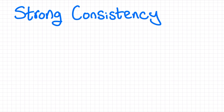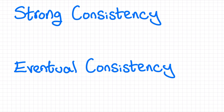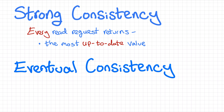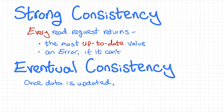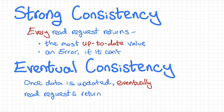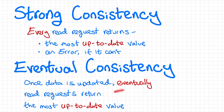There are two main types of consistency: strong consistency and eventual consistency. Strong consistency means that every read request will always return the most up-to-date value, or an error if it can't do that. Eventual consistency is a more relaxed model — it means that once data is updated, eventually, after a short but unspecified length of time, all read requests will again return the same value. The data will eventually become consistent again.